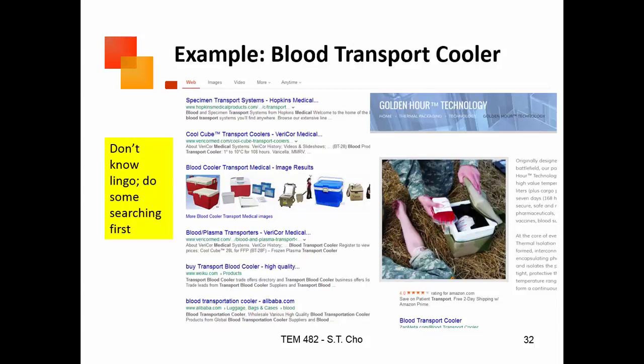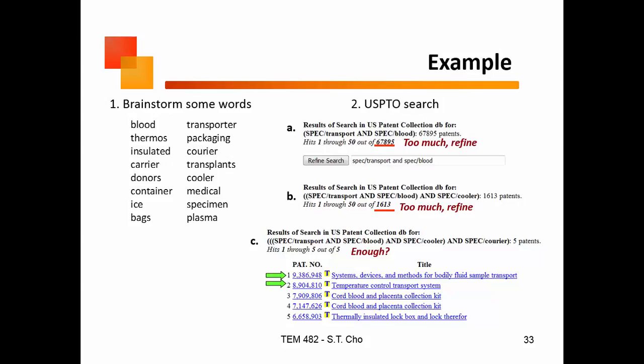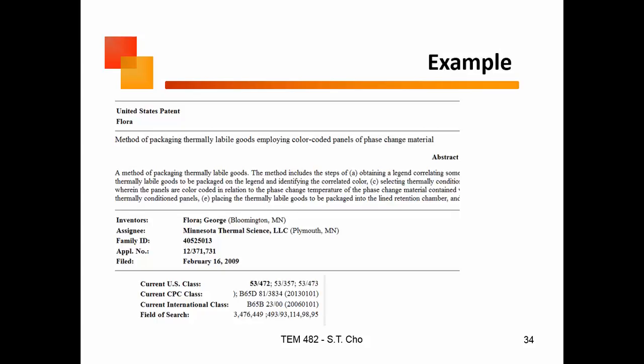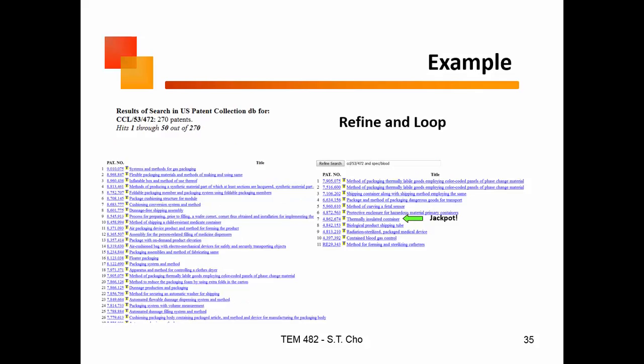Using the example of a blood transport cooler — first, I don't even know what to call this thing, so I start doing web searches to see what products are out there and what people call them. I brainstorm words like 'blood,' 'transporter,' 'cooler,' and 'plasma.' My first search returns 68,000 results — way too much. I refine it by combining 'cooler' with 'blood' and 'transport' — 1,600 is still too many. Adding 'courier' gets me down to five hits, but those five let me find the product class. Going back with that class, I get 270 patents.